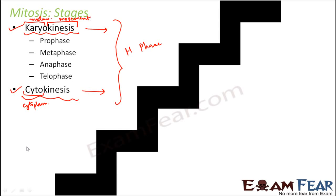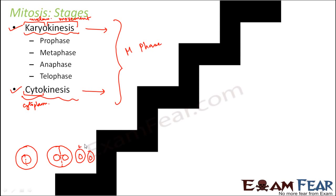Imagine you have one cell with a nucleus inside. Once karyokinesis occurs, the nucleus divides into two halves while the cell remains the same. Then in cytokinesis, the cytoplasm also gets divided into two halves, giving you two daughter cells. The parent cell is getting divided: first the nucleus divides (karyokinesis), followed by the division of the cytoplasm (cytokinesis).